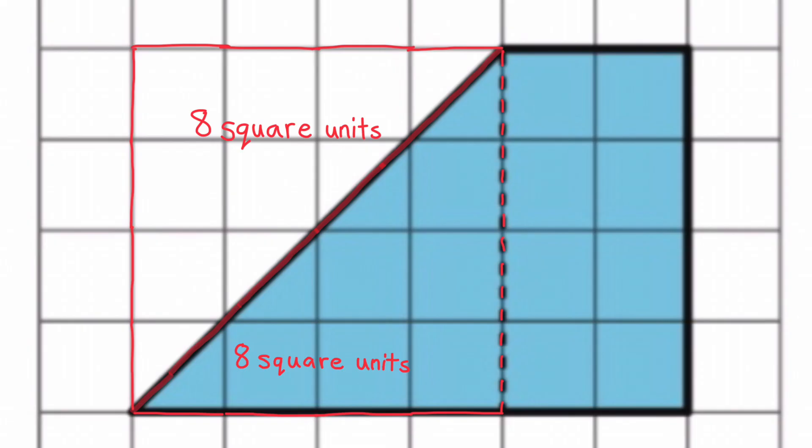And we can look at the rectangle on the right and see that its dimensions are 2 by 4, and 2 times 4 is 8. So the area of the rectangle is also 8 square units. I'm going to decompose the triangle and then rearrange it so that you can see that it has the same area as the rectangle on the right.